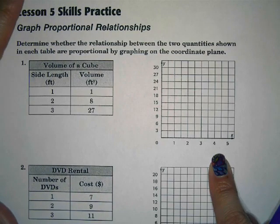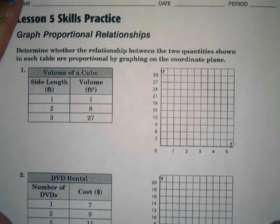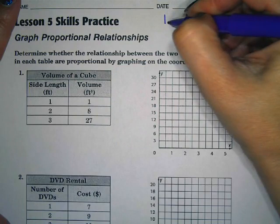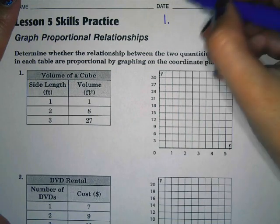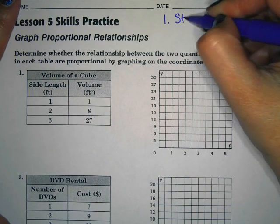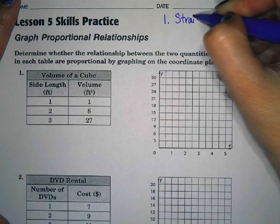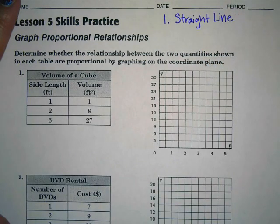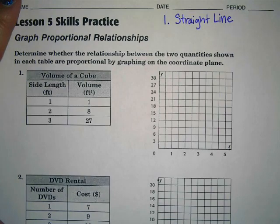Now there's two things that we need to know when it's proportional. If you remember those two things it'll help you with today's homework. So the first thing is that a proportional relationship is a straight line. Okay so that's the first thing. So if it's a straight line it quite possibly could be a proportional relationship.